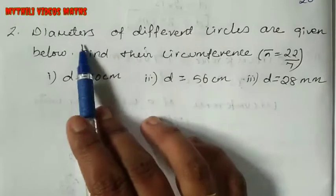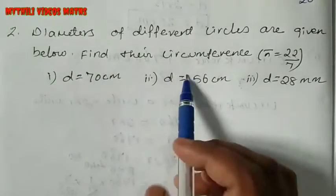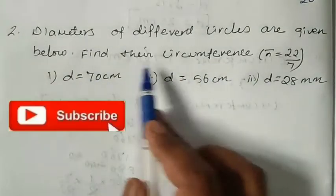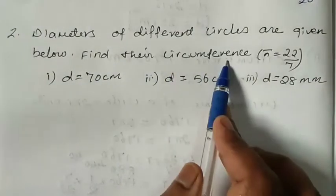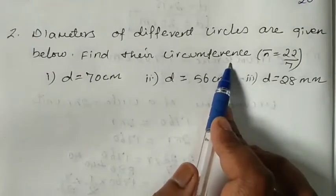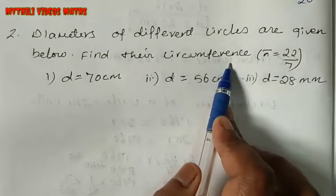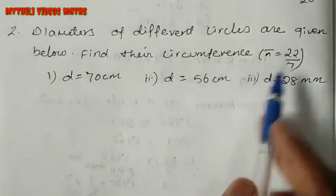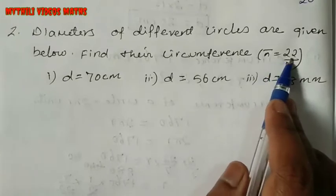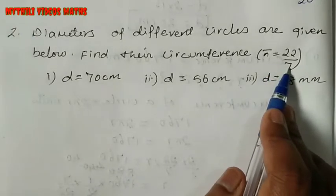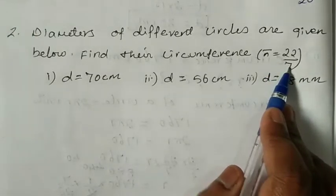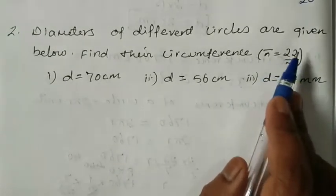Diameters are given below with three subdivisions. We need to find their circumference. The pi value constant is 22 by 7.